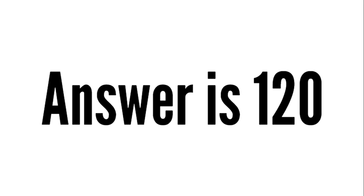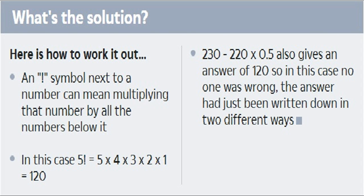Twitter users should have been more careful about the phrasing of the original tweet, as that is where the real trick lies. An exclamation symbol next to a number means multiplying that number by all the numbers below it — so 5! equals 5×4×3×2×1, which equals 120. And 230 minus 220 times 0.5 also gives an answer of 120.